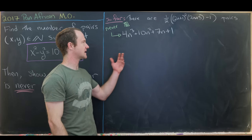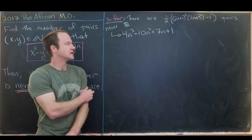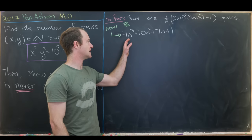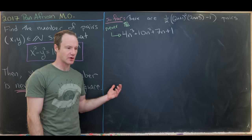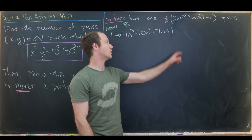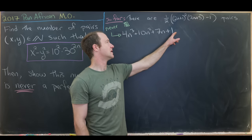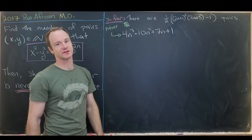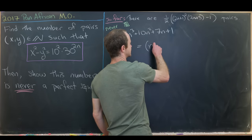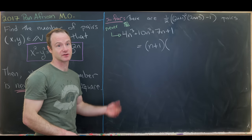Since this is a cubic, we'd like to factor it. By the rational root theorem, the possible rational roots are ±1, ±1/2, and ±1/4. Checking these, we find that n = −1 is a root, so we can factor out (n + 1).